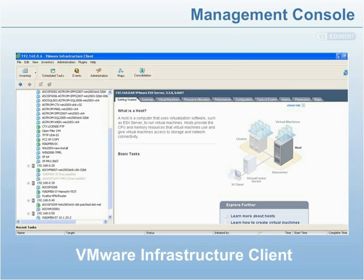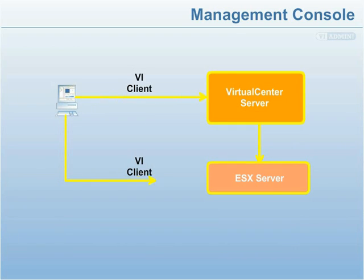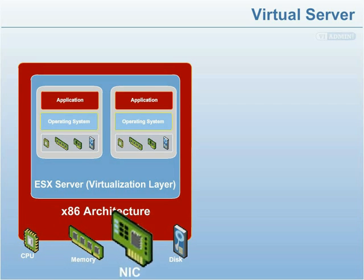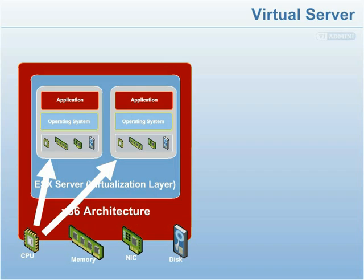The server administrator uses the ESX management console, called VMware Infrastructure Client, to manage and divide one physical server into multiple isolated virtual environments called virtual machines. It also allows the administrator to move virtual machines between physical servers and assign memory, CPU, disk, and network resources. Because the VMware virtualization layer is in complete control of the host's hardware, it enables fine-grained resource allocations — precise amounts of host processor, memory, network I/O, and disk I/O — which can be dynamically adjusted as workloads and service levels change.